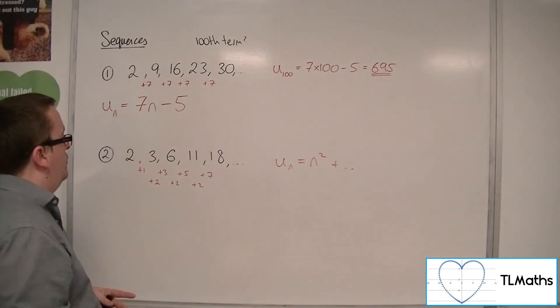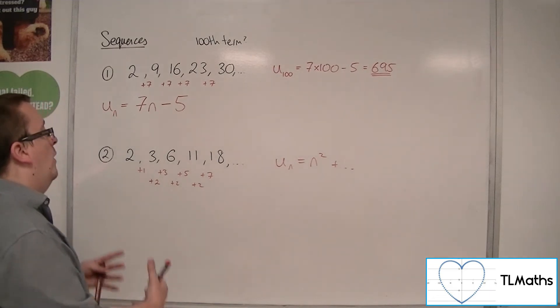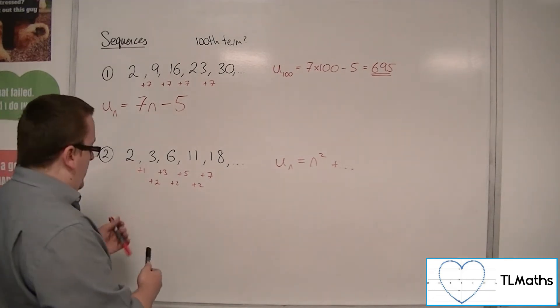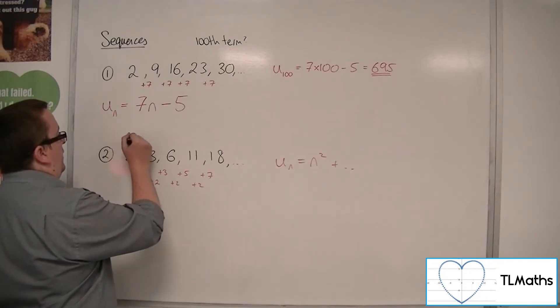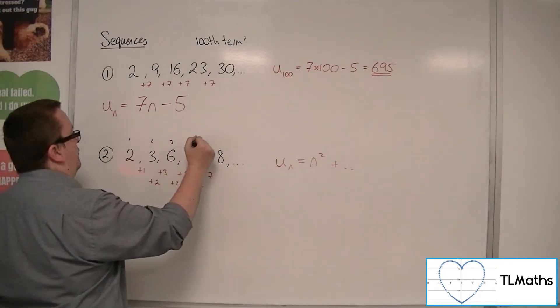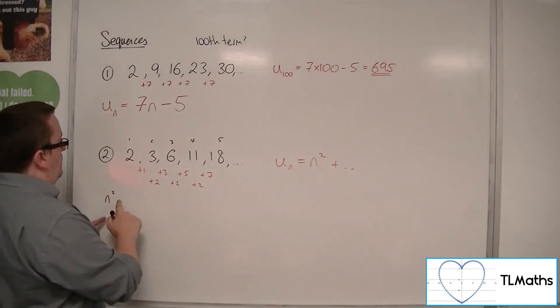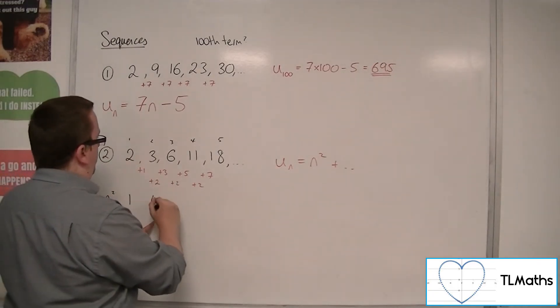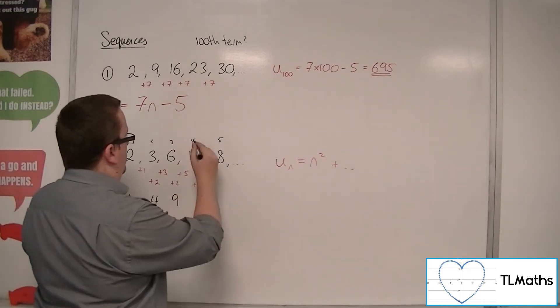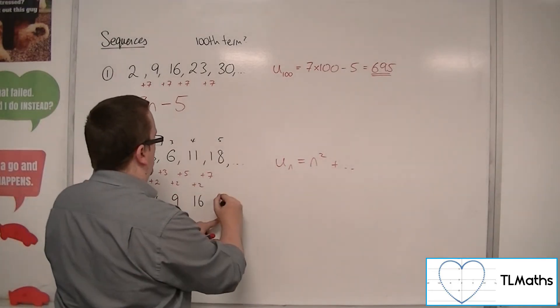Now the way I move forward from this is to then think, well, if this is my first term, that's my second term, third, fourth, and fifth, then n squared would be 1, then 4, then 9, then 16, then 25.